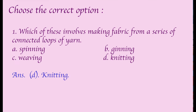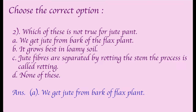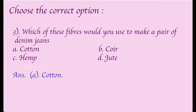Choose the correct options. First: Which of these involves making fabric from a series of connected loops of yarn? Answer: Knitting. Second: Which of these is not true for jute? Answer: We get jute from the bark of the flax plant.